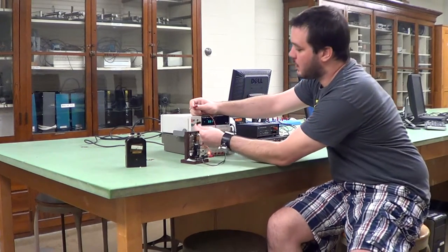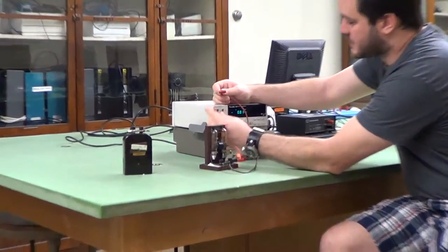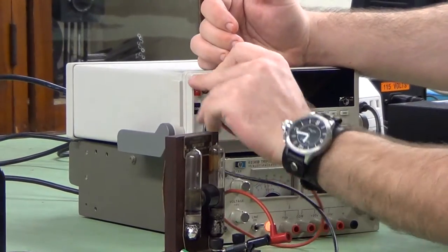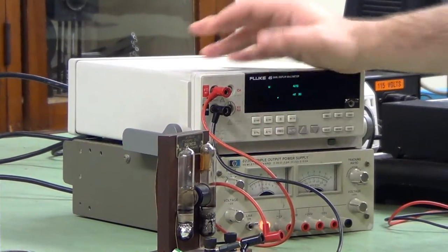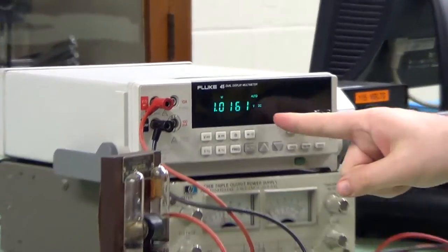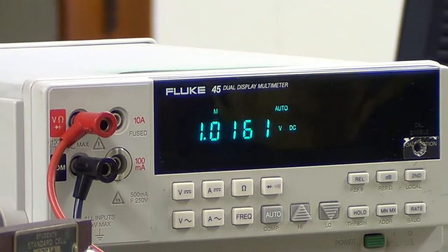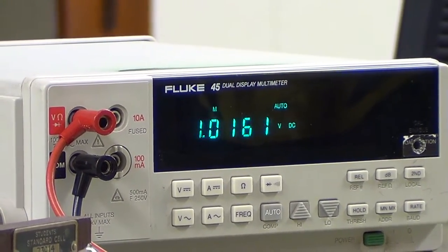So we're going to plug the wires into the digital voltmeter, and we're going to turn it on to DC voltage, and then we're going to get a readout for what the voltage from the battery is.